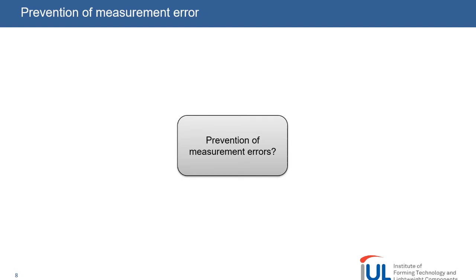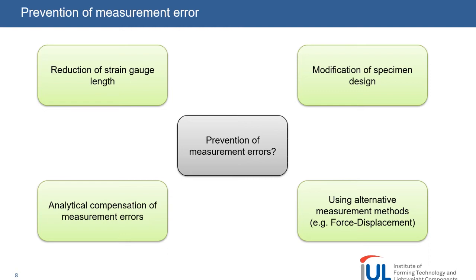Now we can estimate the error, but how can we prevent the error? We identified four approaches during our work. First, we can reduce the strain gauge length to a proper value. Secondly, we can modify the specimen design to reduce local strain gradients. The third strategy is to calculate the error and analytically compensate the measured strain iteratively. The last strategy is to use other measurement methods, for example evaluate the force-displacement curve. In this work, we focused on the first two strategies: reducing the gauge length and presenting a modified specimen shape.